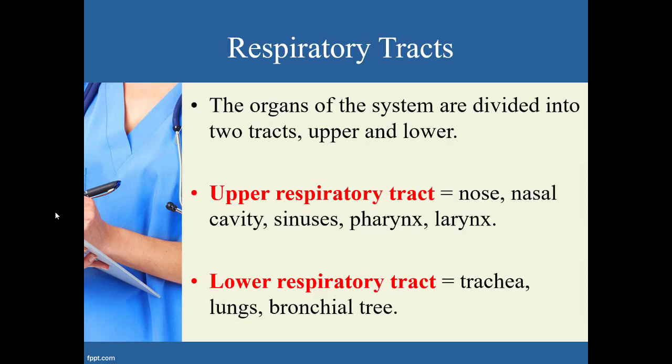When we talk about the respiratory system, organs are divided into two tracts: the upper respiratory tract and the lower respiratory tract. The upper tract includes the nose, nasal cavity, sinuses, pharynx, and the larynx. The organs found in the lower respiratory tract are the trachea, the lungs, and the bronchial tree. We'll talk about all of these throughout this chapter.